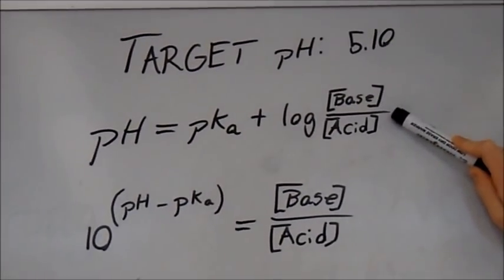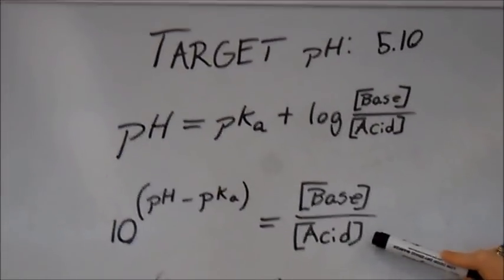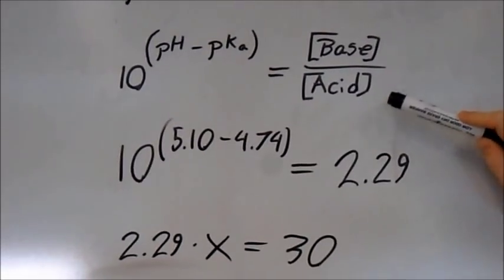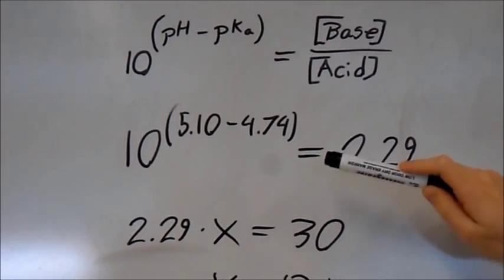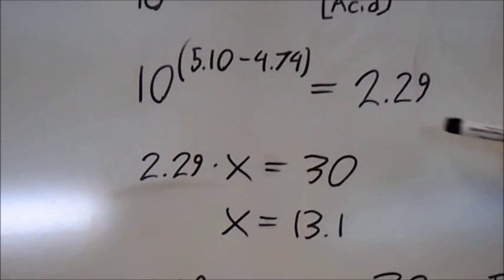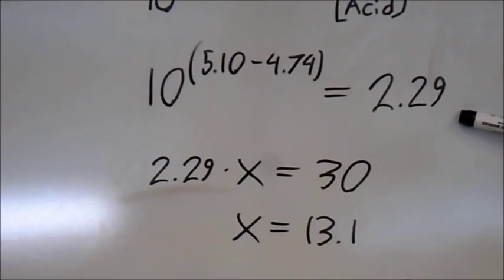To solve for this ratio of base to acid, subtract pKa from both sides of the equation and compute the anti-log. Our example number of 5.10 subtracted from the pKa of acetic acid, which is 4.74, results in 2.29.